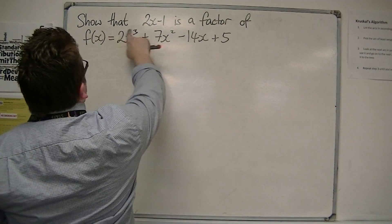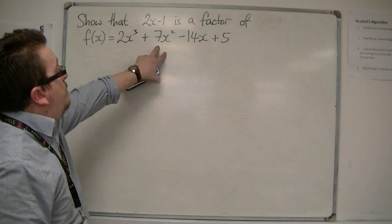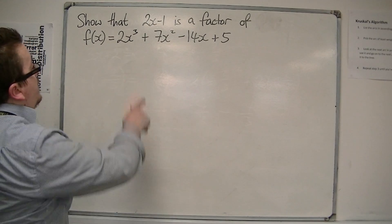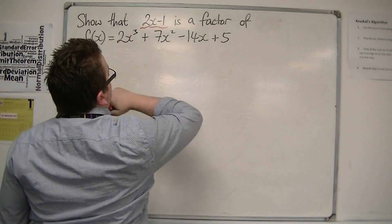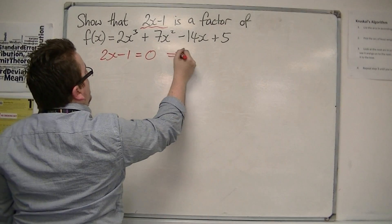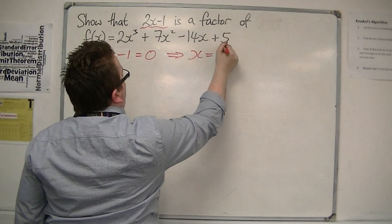If we were asked to show that 2x - 1 is a factor of 2x³ + 7x² - 14x + 5, then first of all look at when 2x - 1 = 0. So if 2x - 1 = 0, add 1 to both sides, divide both sides by 2, and we get x = 1/2.